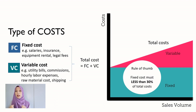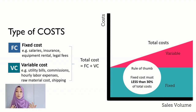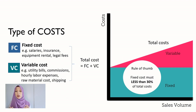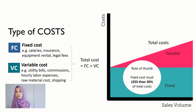Understanding fixed and variable costs helps you identify a profitable pricing level for your products. It also helps in break-even analysis — determining how many units you need to sell to make a profit, or at what point you would incur a loss. Additionally, you can identify economies of scale, which refers to the cost advantages gained as output increases. See you in the next video!